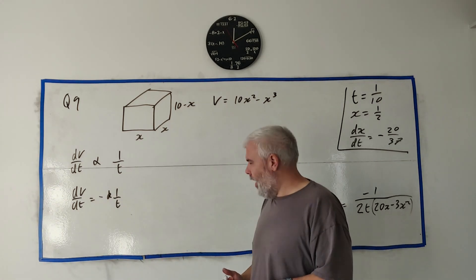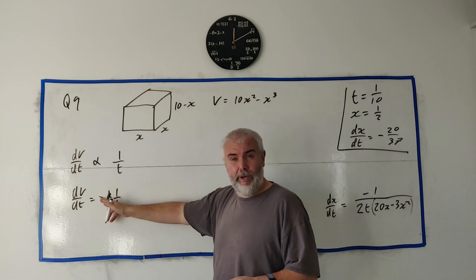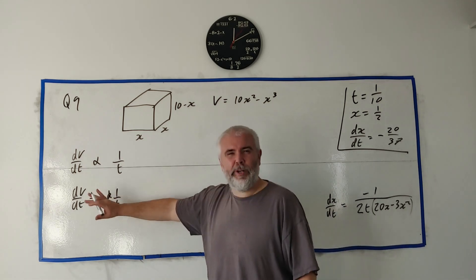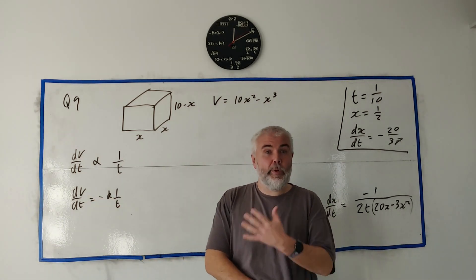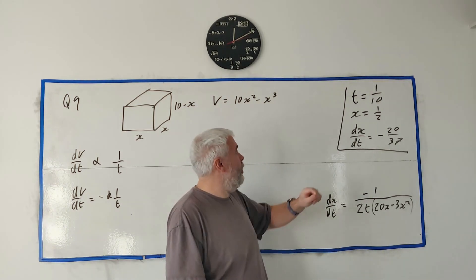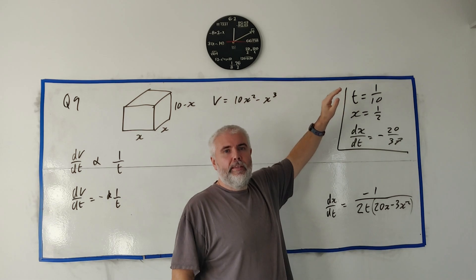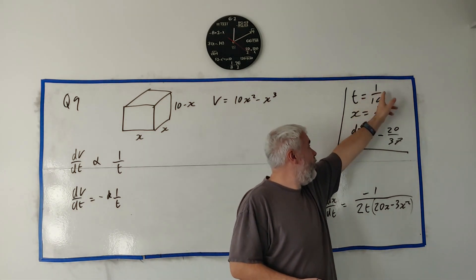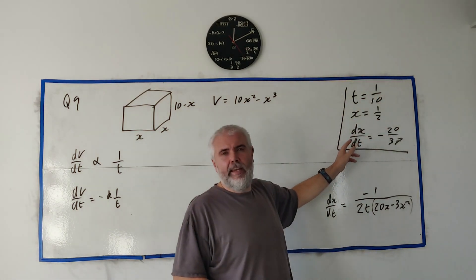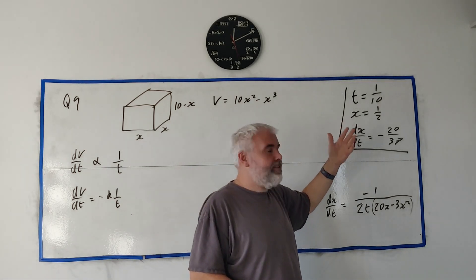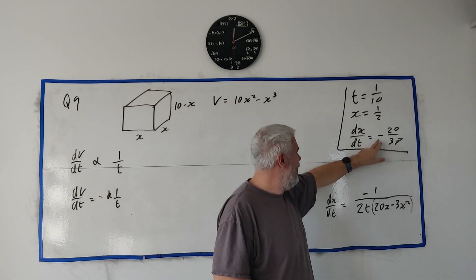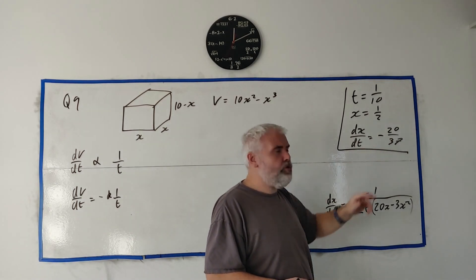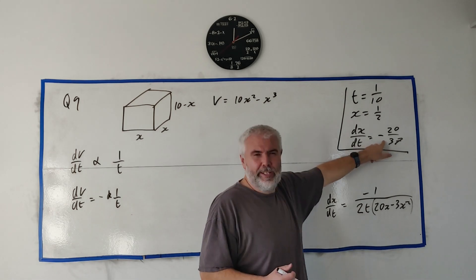If I put a minus in, when I solve the constant later whatever answer I get will just differ in sign from if you didn't include the minus. Reading on, they tell us when t = 1/10, x = 1/2, and the rate of decrease of x equals −20/35. The minus here is important — if you can't get the right answer it could be this minus.